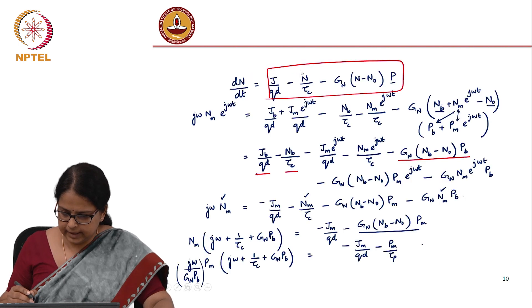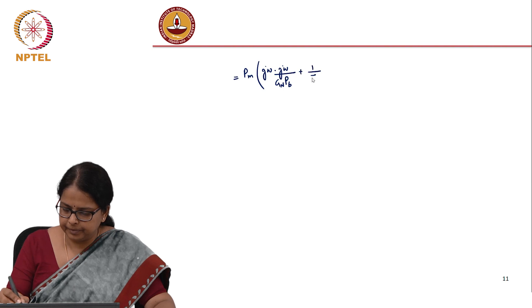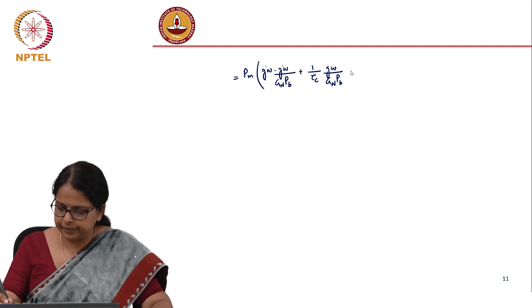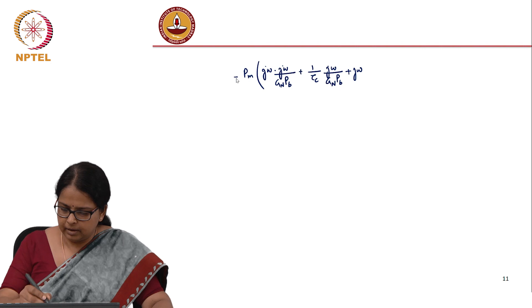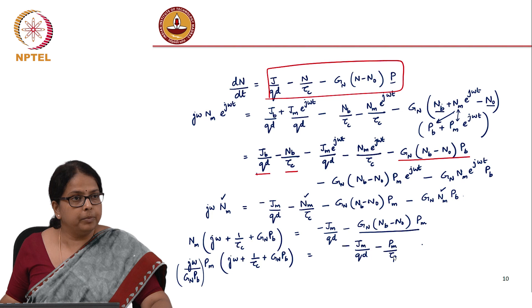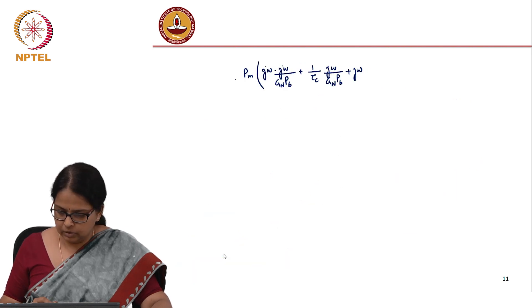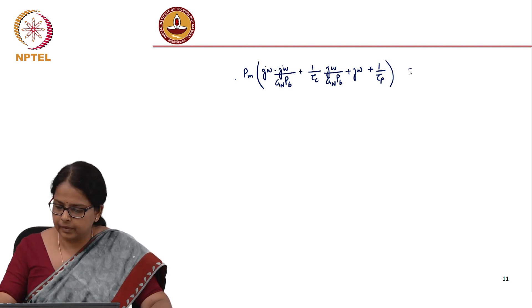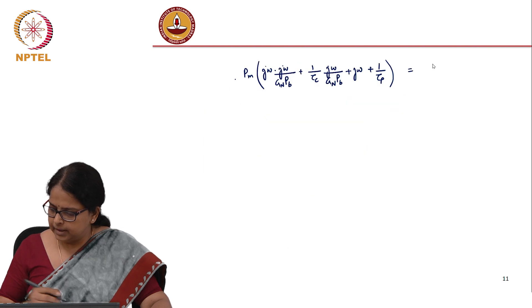This term was that. Second term is 1/tau_c times this. Third term is g_n*p_b times this, so it is just j*omega. And I have a fourth term which is p_m/tau_p which comes to this side. This becomes 1/tau_p equals j_m/(qd).